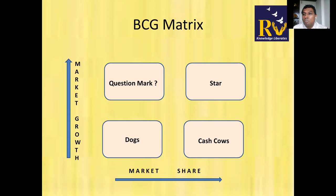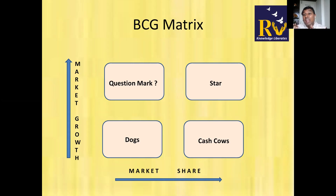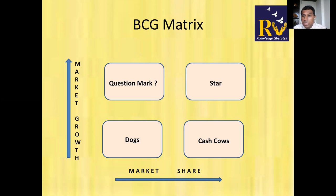When your product enters the Star phase — the market is growing and you're becoming a market leader — you pump in money because the market growth is rewarding your increased market share. This is primarily related to the growth phase. As the industry starts receding, you become a Cash Cow — still market leader, but new competition is unlikely to enter. You start milking without pumping in extra resources, because market growth is limited.